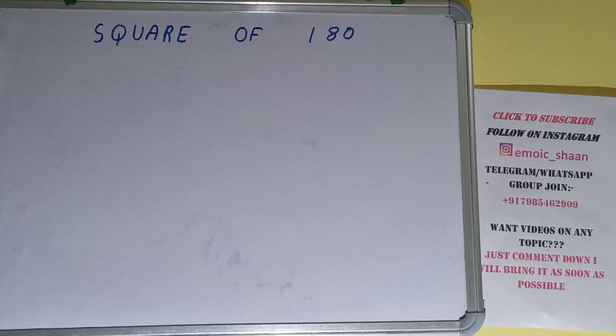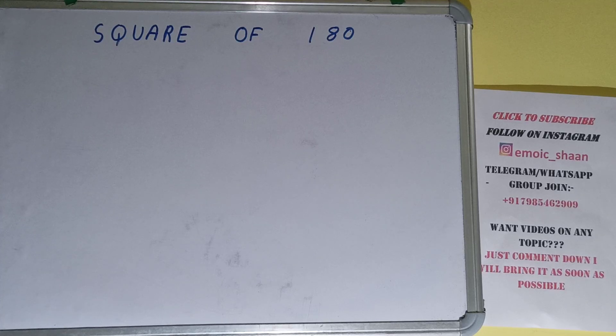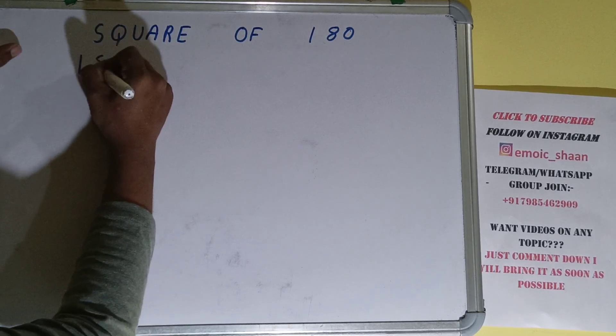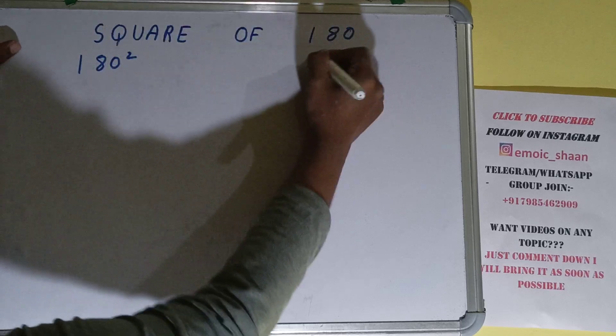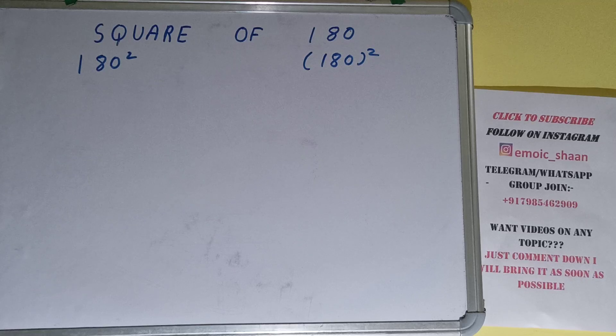Hello friends, and in this video I'll be helping you with the square of the number 180. So let's start. Before solving this, let me tell you that square of 180 can also be written as 180 raised to the power 2 or inside bracket 180 outside 2. Okay, so these all have one and the same meaning.